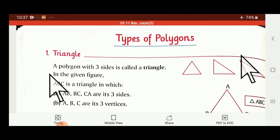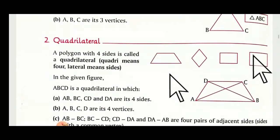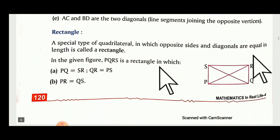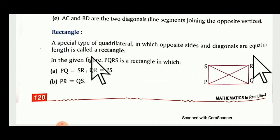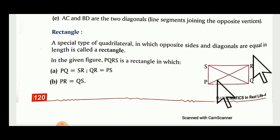Types of polygons: first, a triangle is formed with the help of 3 lines. Then a quadrilateral has 4 sides — any closed shape with 4 lines is called a quadrilateral. A rectangle is a special type of quadrilateral in which opposite sides and diagonals are equal in length. In a rectangle, the two diagonals are equal.